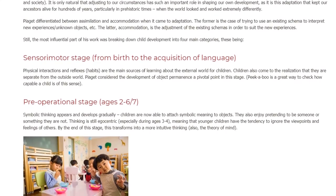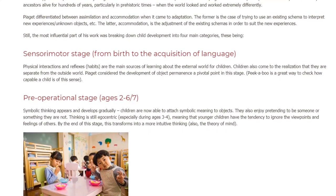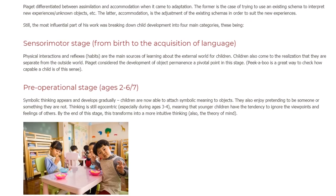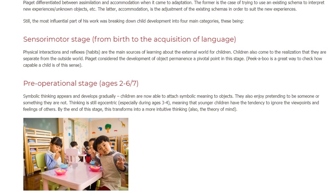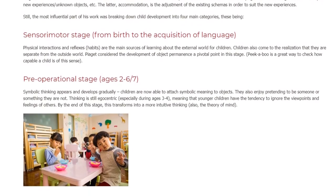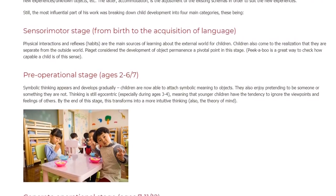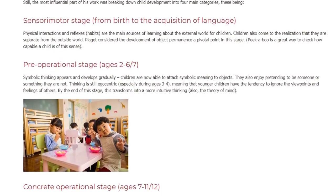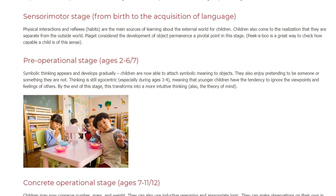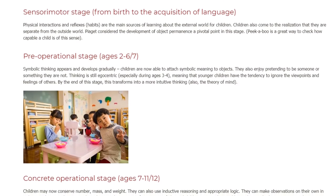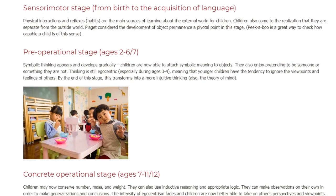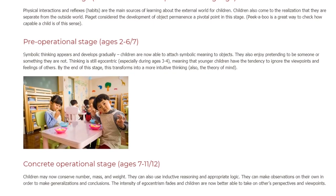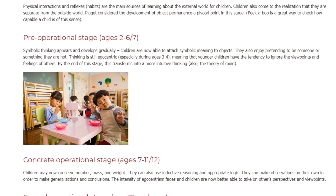The Pre-operational stage covers ages 2–7. Symbolic thinking appears and develops gradually; children are now able to attach symbolic meaning to objects and enjoy pretending to be someone or something they are not. Thinking is still egocentric, especially during ages 3–4, meaning younger children have the tendency to ignore the viewpoints and feelings of others. By the end of this stage, this transforms into more intuitive thinking, and also the theory of mind.